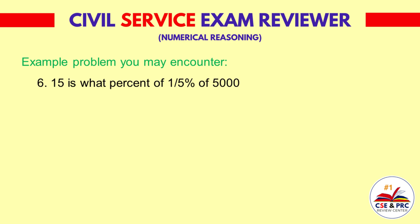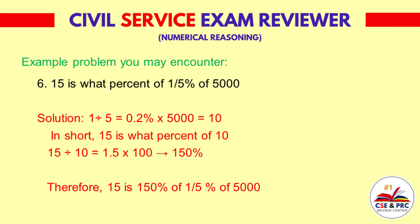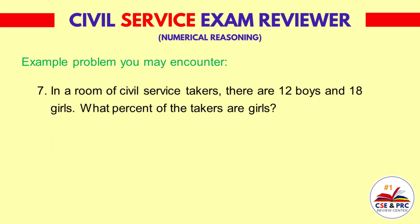Number 6: 15 is what percent of 15 percent of 5,000? Solution: 1 divided by 5 equals 0.2 percent times 5,000 is equal to 10. In short, 15 is what percent of 10? 15 divided by 10 is equal to 1.5 times 100, which equals 150 percent. Therefore, 15 is 150 percent of one-fifth percent of 5,000.